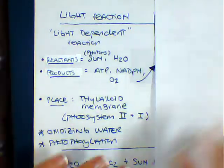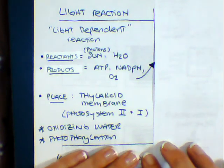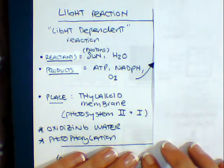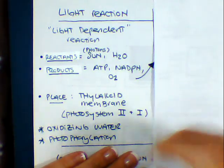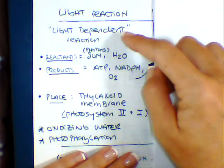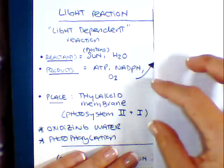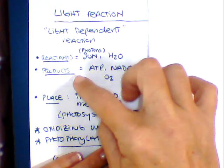Before we start with anything, let's go over our main characters in the play here. Light reaction, I want you guys to add to your notes, this is also known as a light dependent reaction because we depend on light in order for this whole thing to happen. You have your reactants versus your products.